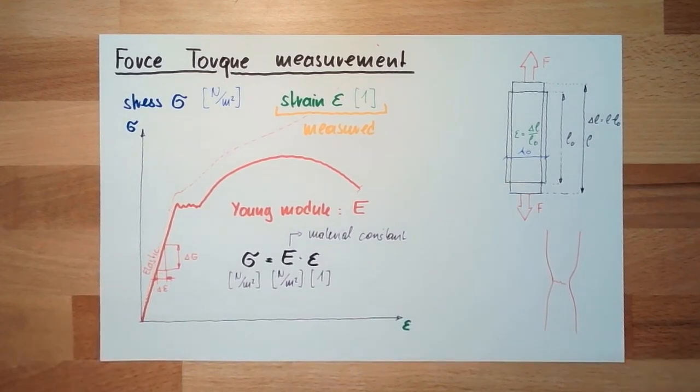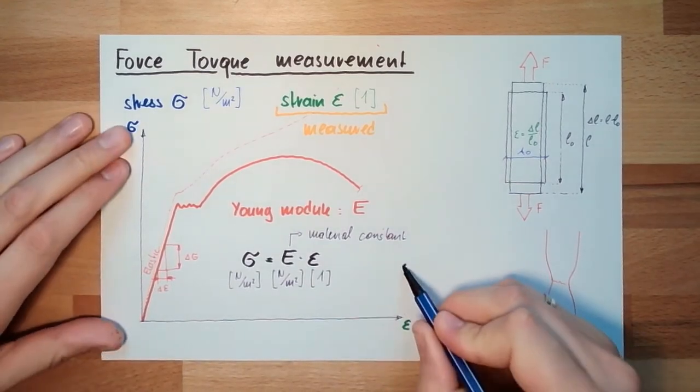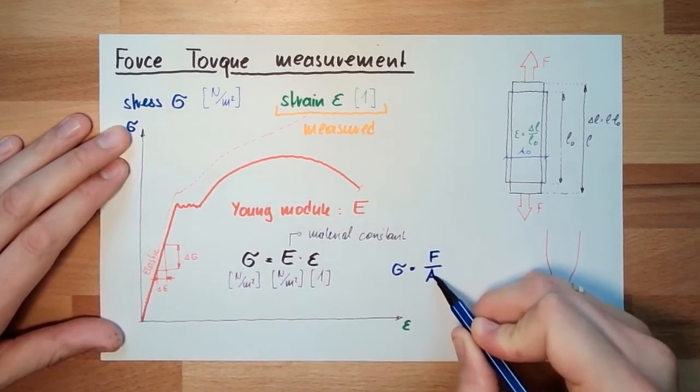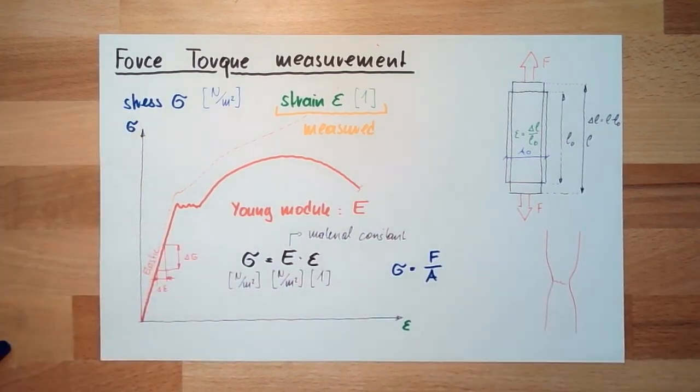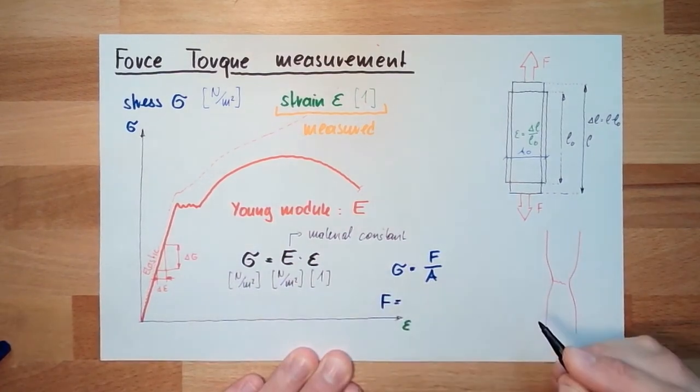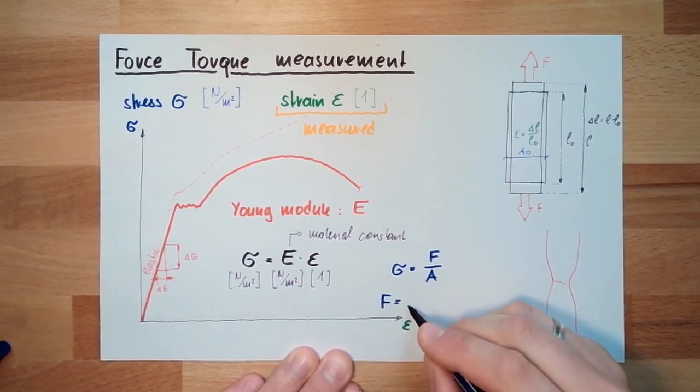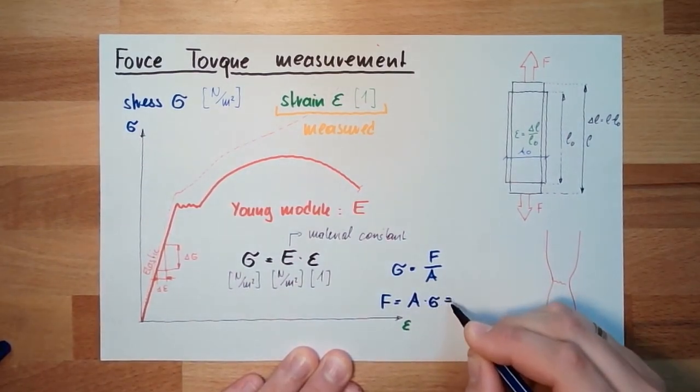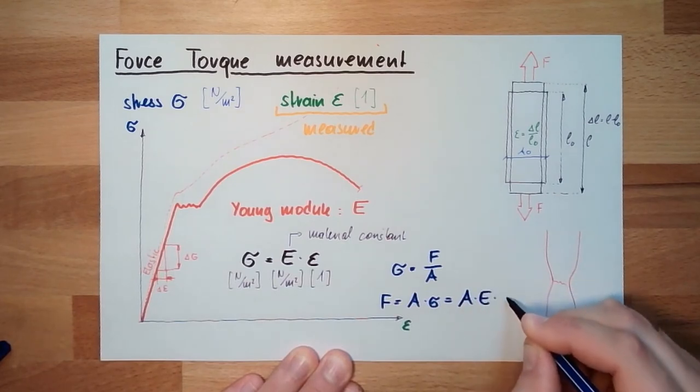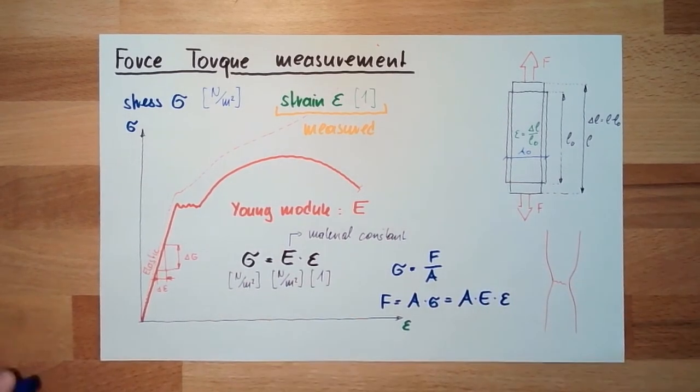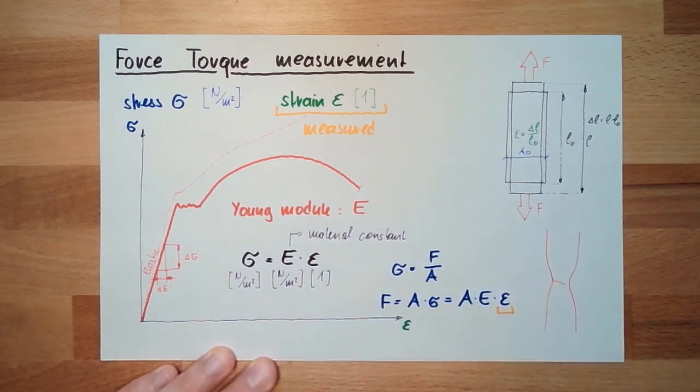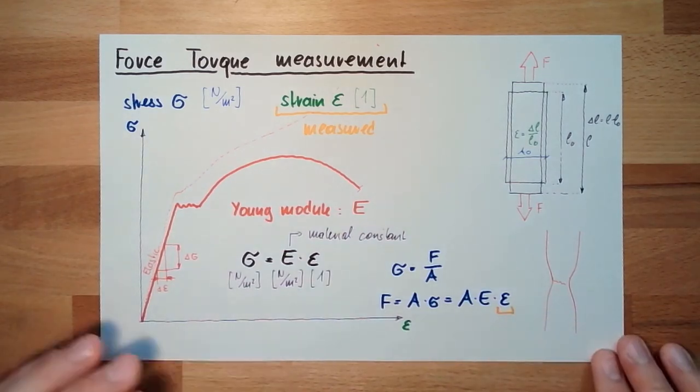The stress sigma is the force divided by the area. So the force is area multiplied by sigma. And this equals A, E, epsilon. This is what I measure. These two I have to know.